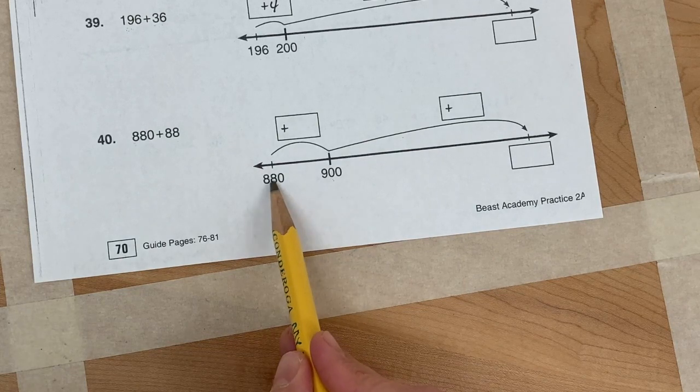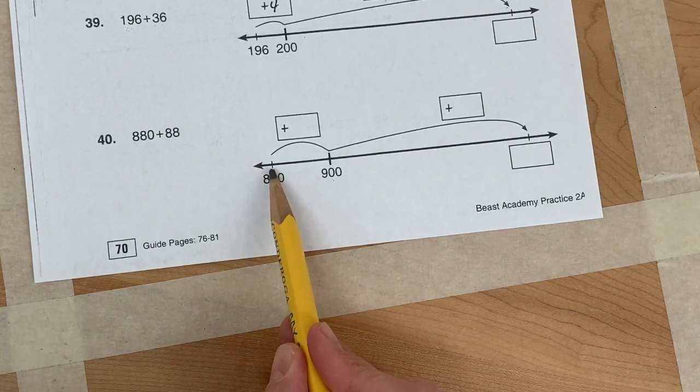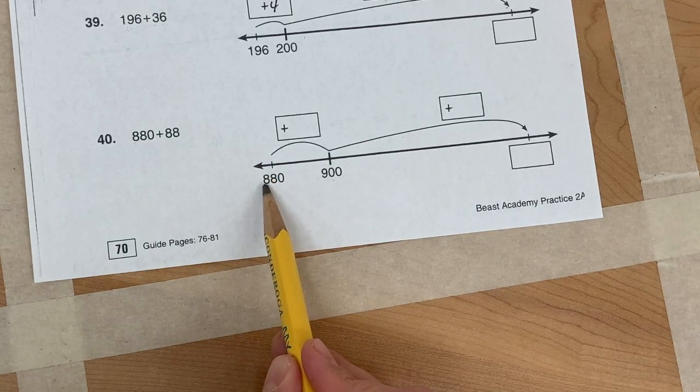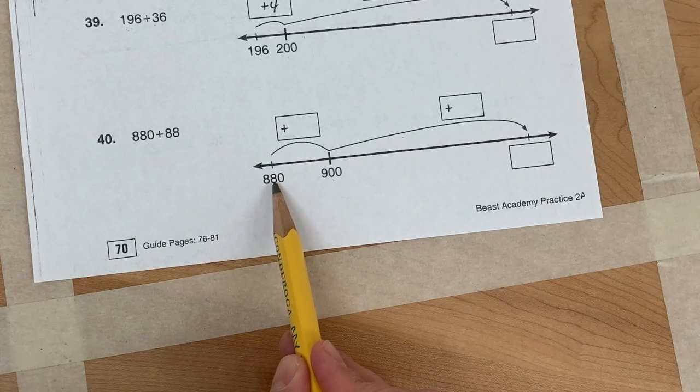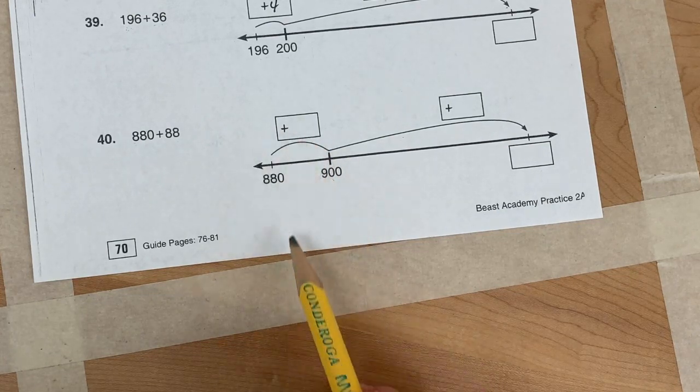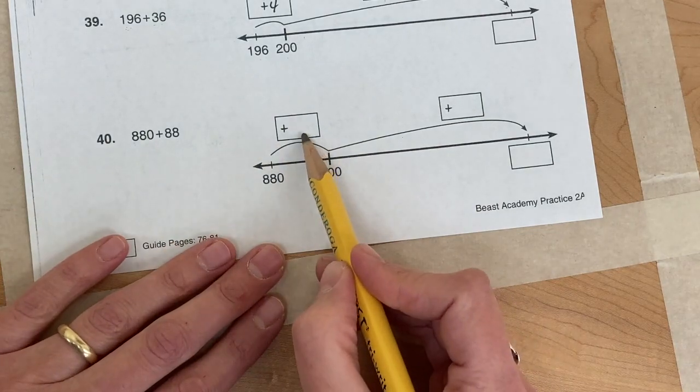You're trying to get these tens to reach another 100. So what would you have to add to 80 to get to 100? That's your answer.